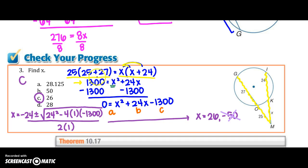and because I have this X squared that won't cancel, I'm going to move everything over to one side. That's why I subtracted that 1,300. So, I ended up with 0 equals X squared plus 24X minus 1,300. Now, you can factor, or you can go into your quadratic formula. Remember, our quadratic formula is X equals negative B plus or minus square root B squared minus 4AC all over 2A.